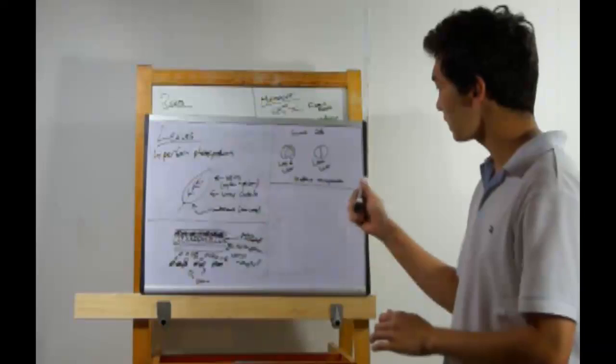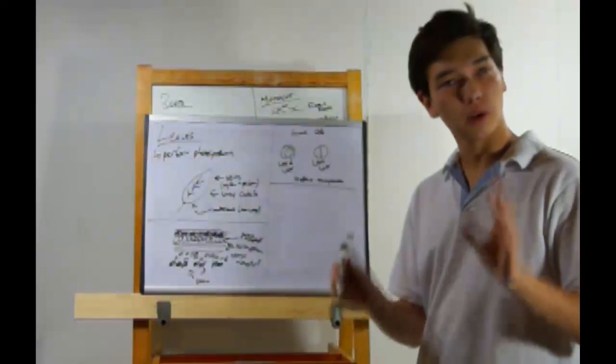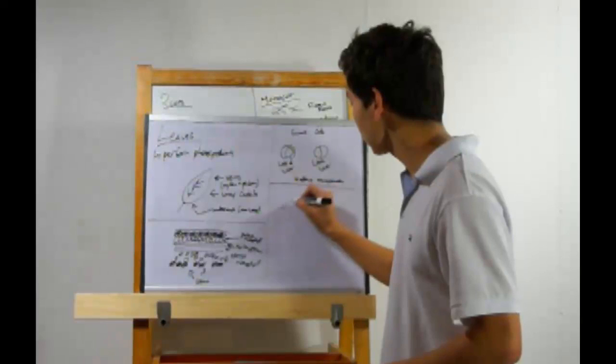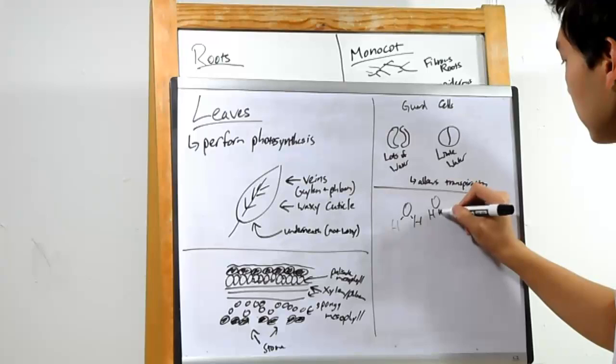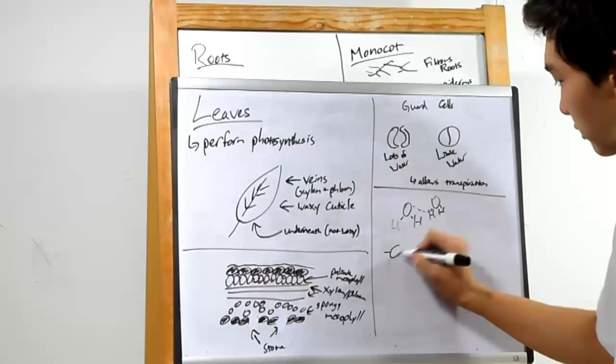This allows for transpiration, which moves water throughout the plant. If you recall, water forms hydrogen bonds and has its property known as cohesion, which means water sticks to each other. It's kind of like this. If we have a water molecule right here, it'll attach to another water molecule over here through hydrogen bonding.